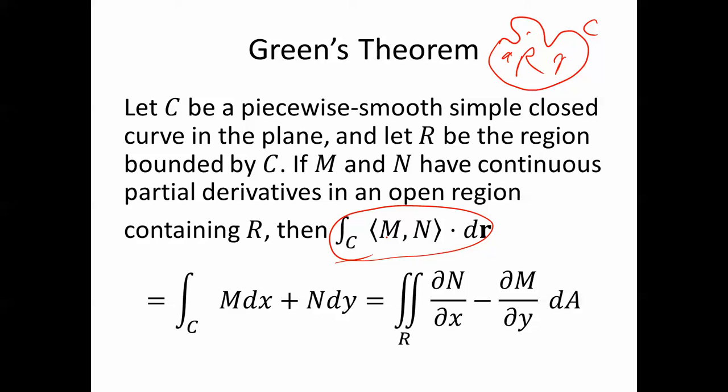It turns out that this line integral equals just an ordinary double integral, the double integral of partial N partial x minus partial M partial y over the region R, where R is what's inside the curve c.